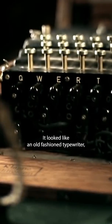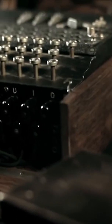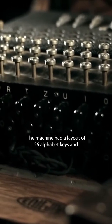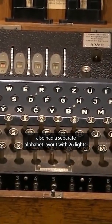It looked like an old-fashioned typewriter, but was the scourge of the Allied forces for many years. The machine had a layout of 26 alphabet keys, and also had a separate alphabet layout with 26 lights.